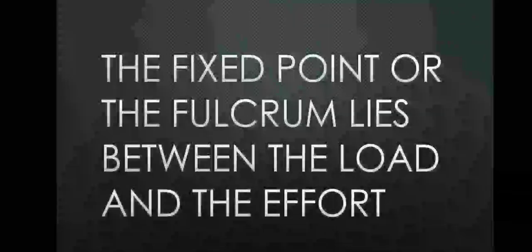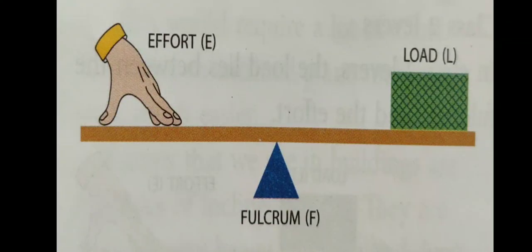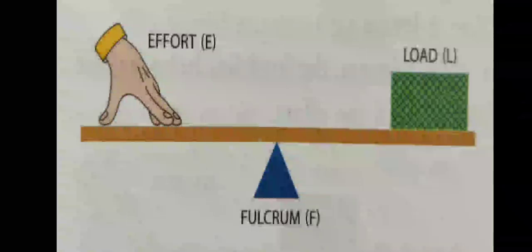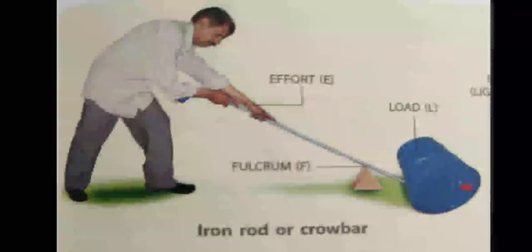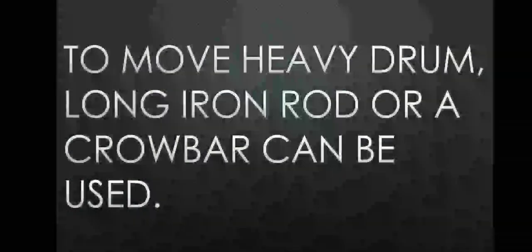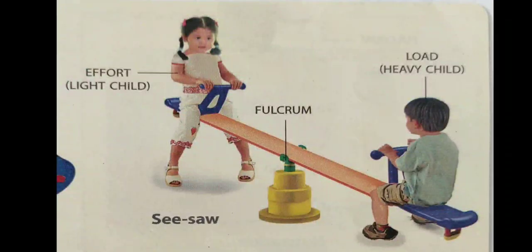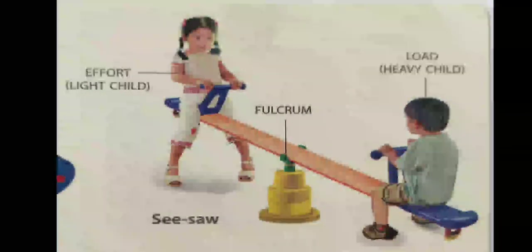Class 1 lever: the fixed point or the fulcrum lies between the load and the effort. You can see here in this picture that fulcrum is lying between load and effort. Iron rod or crowbar is an example of Class 1 lever with fulcrum in the center. To move a heavy drum, a long iron rod or crowbar can be used with fulcrum in the center. Seesaw is another example of Class 1 lever with fulcrum in the center.